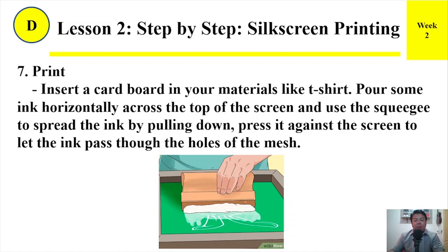Step 7: Print. Insert a cardboard into your material, like a t-shirt. Pour some ink horizontally across the top of the screen and use the squeegee to spread the ink by pulling down. Press it against the screen to let the ink pass through the holes of the mesh.